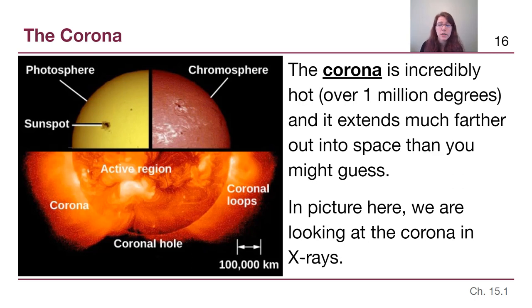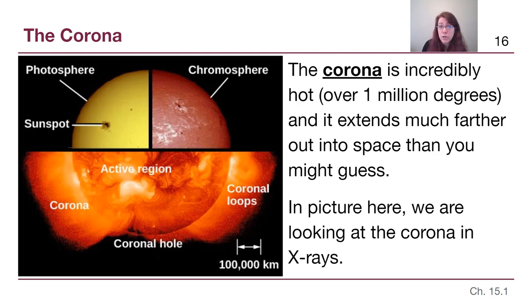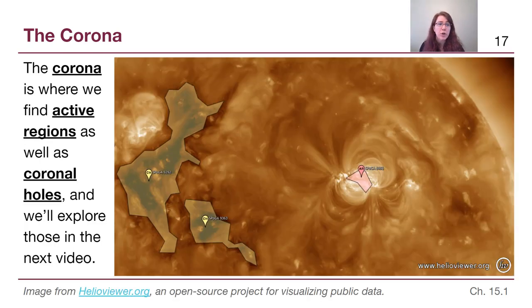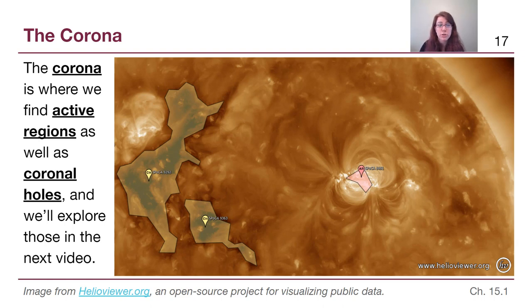The corona is extremely hot — over a million degrees — and when we take pictures of it, we typically use X-rays or extreme ultraviolet. So to summarize: the photosphere is visible light where we see sunspots; the chromosphere is near-ultraviolet; and the corona is captured with the highest energy forms of light — X-rays or extreme ultraviolet. In the corona, we find active regions and coronal holes, which we'll explore in the next video.